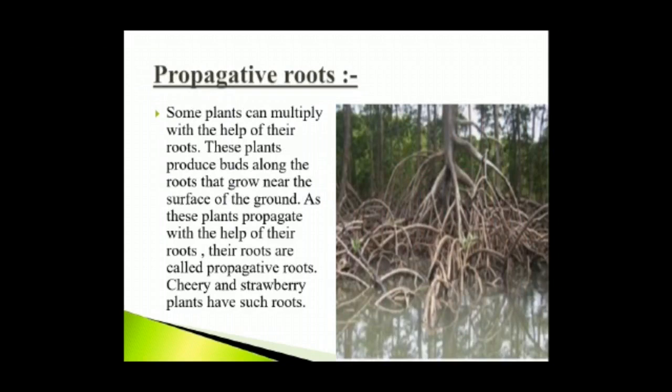Propagative roots: Some plants can multiply with the help of their roots. These plants produce buds along the roots that grow near the surface of the ground. As these plants propagate with the help of their roots, their roots are called propagative roots. Cherry and strawberry plants have such roots.